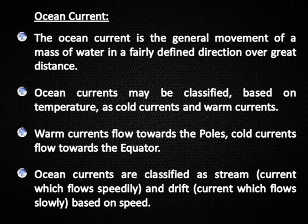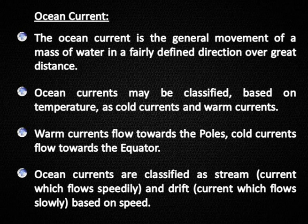Ocean Currents: An ocean current is the general movement of a mass of water in a fairly defined direction over great distances. Ocean currents may be classified based on temperature as cold currents and warm currents — warm currents flow towards the poles, and cold currents flow towards the equator. Based on speed, currents are classified as stream currents, which flow speedily, and drift currents, which flow slowly.